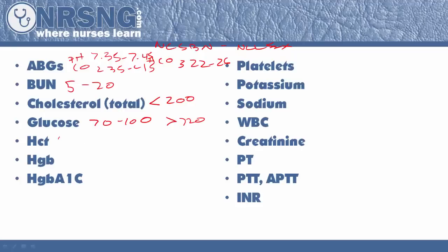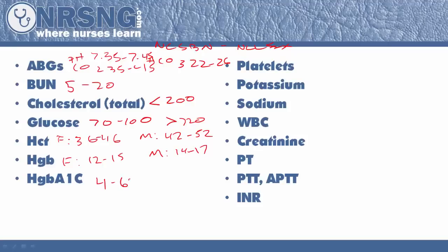For hematocrit, for females the number I want you to know is 36 to 46; for males, 42 to 52. For hemoglobin, for females it's 12 to 15 and for males 14 to 17. For hemoglobin A1C — glycosylated hemoglobin — we're looking at about 4 to 6 percent, and we really want it to be less than 7 percent. Greater than 7 percent indicates a diabetic that's a bit out of control.